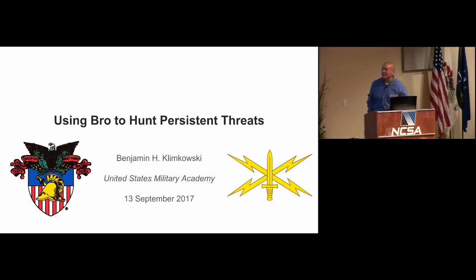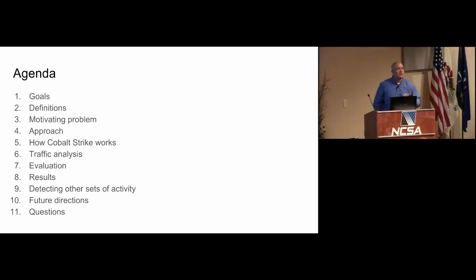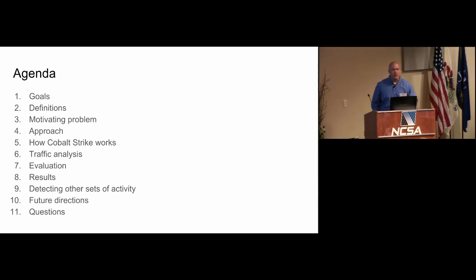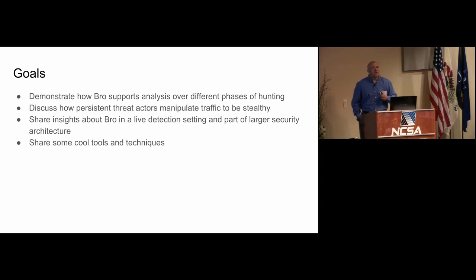I'm going to try to speak quickly — it's the first brief, so bear with me. I'll go through some background, some theory about persistent threats, and specifically we're going to talk a lot about Cobalt Strike, which is a popular penetration testing tool. Then we'll go through the process of how we used Bro to analyze traffic to detect it, how we instrumented Bro in a live setting, and finally some lessons learned. I'd like you to walk away understanding how Bro could support every part of this enterprise, how tricky it is to look for persistent threats, how it fits in a live defense-in-depth strategy, and some useful scripts and tools we'd like to share.